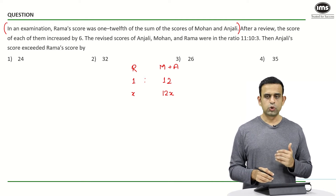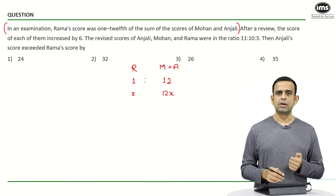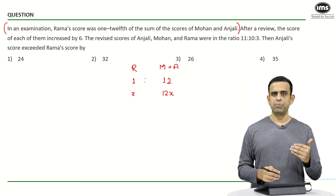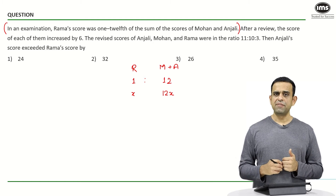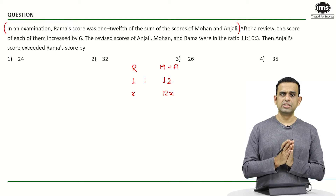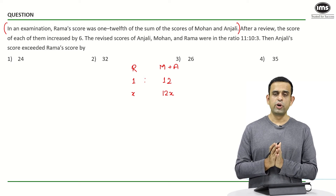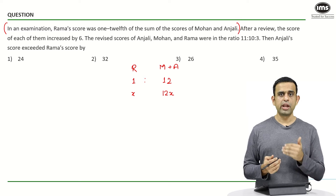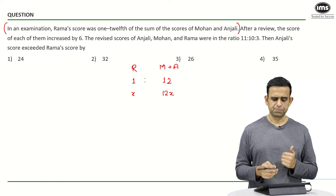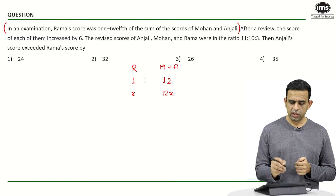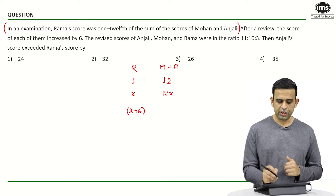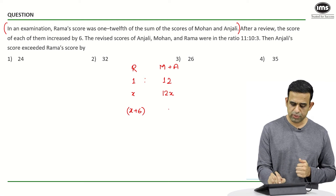As of now I don't know how much is Mohan and how much is Anjali separately. After review, the score of each of them increases by 6. So Rama's score will become x plus 6. The total score of Anjali and Mohan put together will go up by 12, since each gets plus 6. So post review, Rama's score is x plus 6 and Anjali plus Mohan together is 12x plus 12.